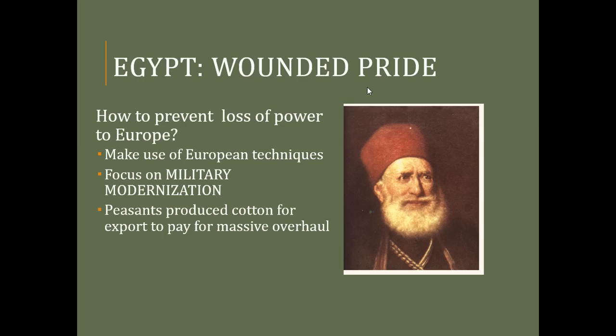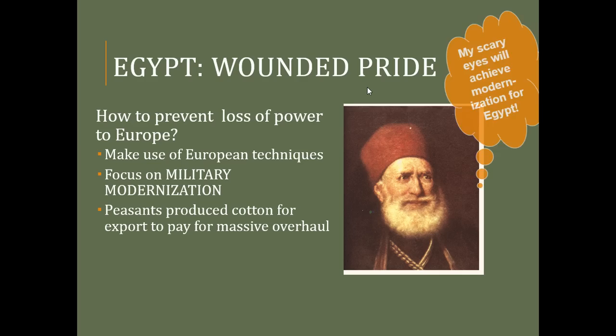Muhammad Ali — depicted a little like Santa — industrialized and modernized the military. To pay for military modernization, he directed peasants to produce cotton for export. By this era, Egypt begins to be a primary cotton exporter — you can still see Egyptian cotton sheets at stores today. They used that cotton exportation to pay for this massive military overhaul, with the goal of achieving modernization for Egypt.